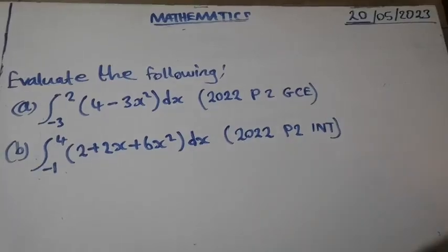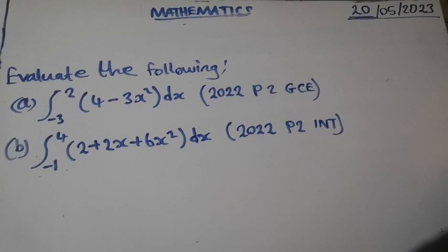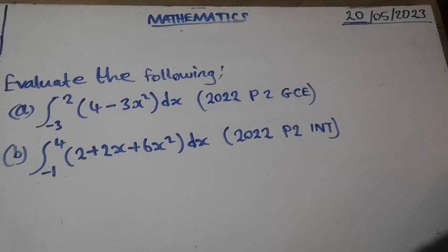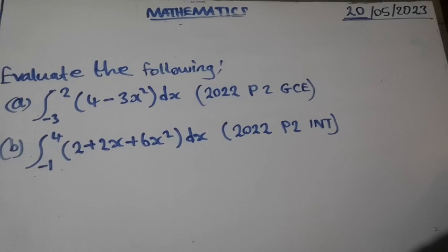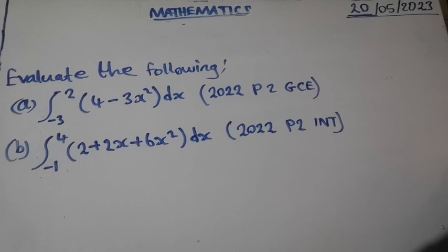Evaluate the following. Part A: integral of open bracket 4 minus 3x squared close bracket dx. Part B: integral of open bracket 2 plus 2x plus 6x squared close bracket dx.